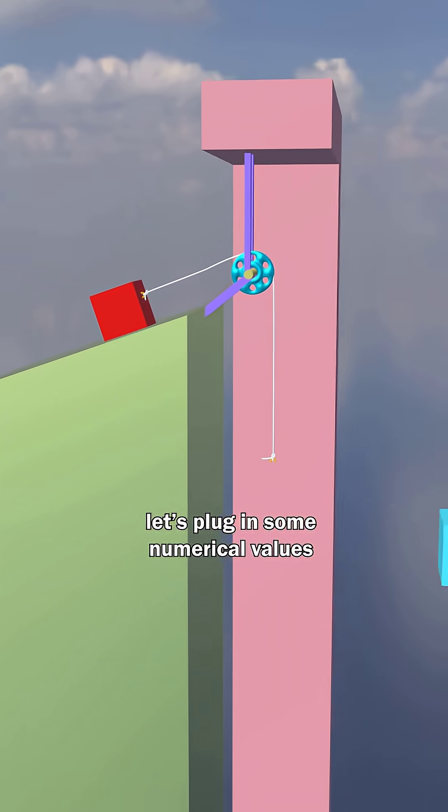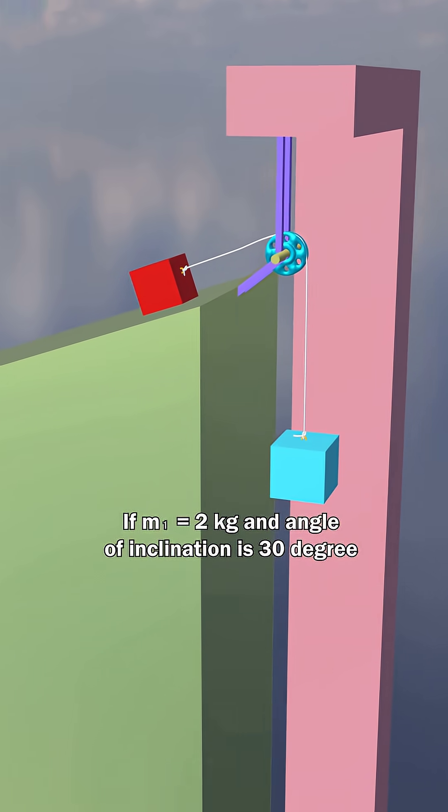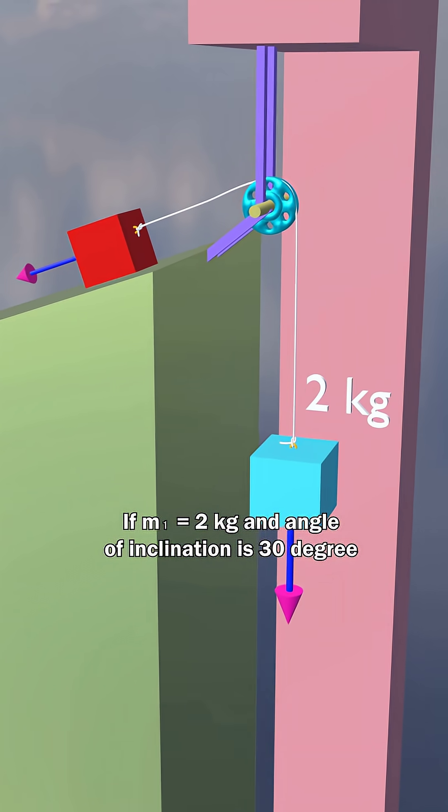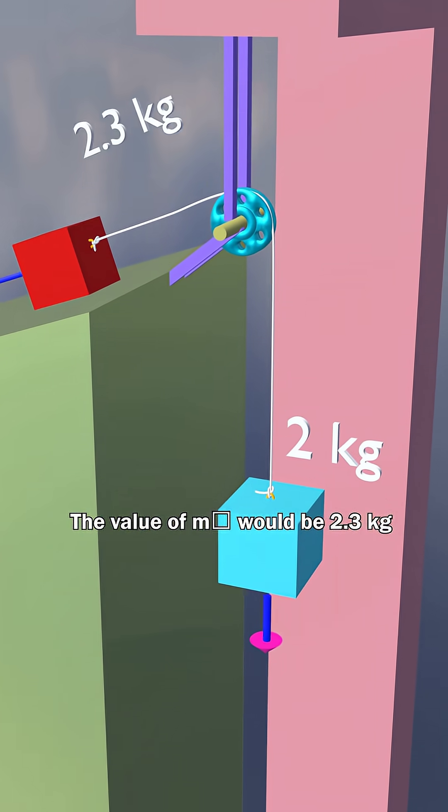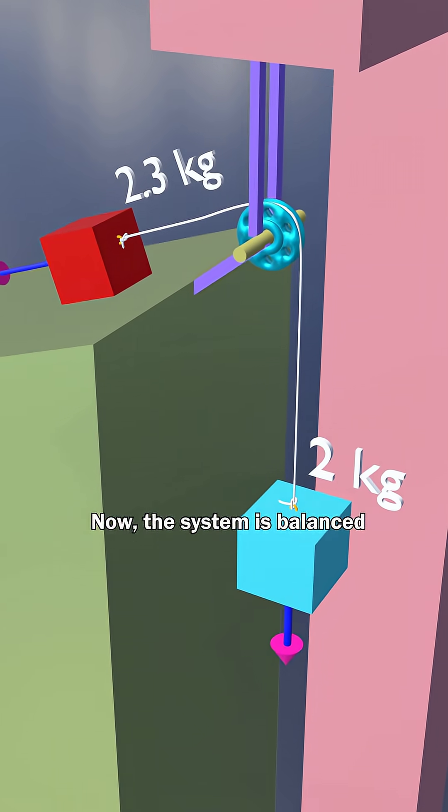To make this more intuitive, let's plug in some numerical values. If m1 equals 2 kg and the angle of inclination is 30 degrees, then the value of m2 would be 2.3 kg. And now the system is balanced.